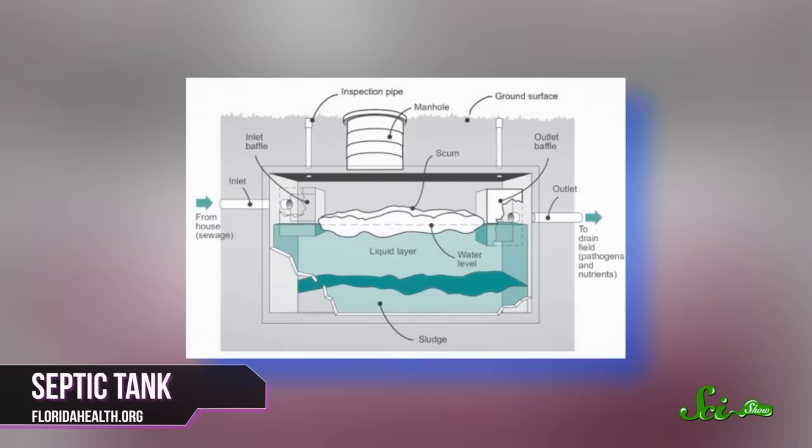Then, in the span of about two days, naturally occurring anaerobic bacteria get to work, reducing solids in the wastewater into liquids and a kind of greasy, fatty residue. The insoluble particles will sink to the bottom and form a sludge, while the fats form a layer at the top of the tank.